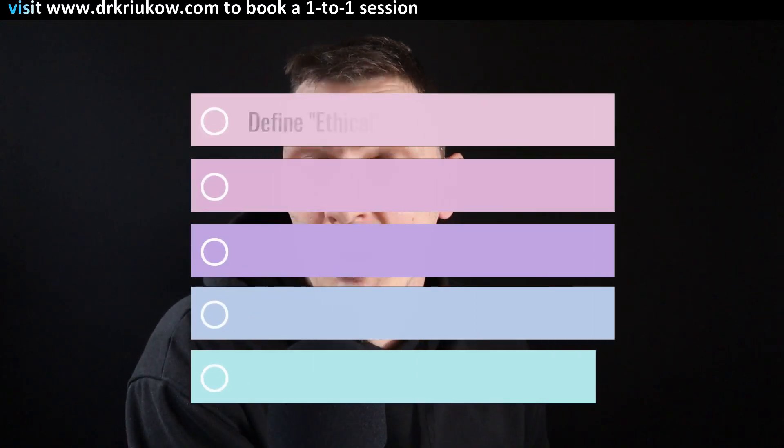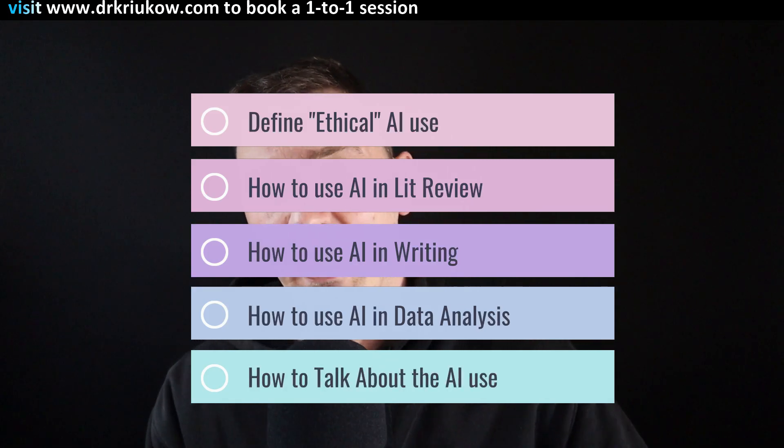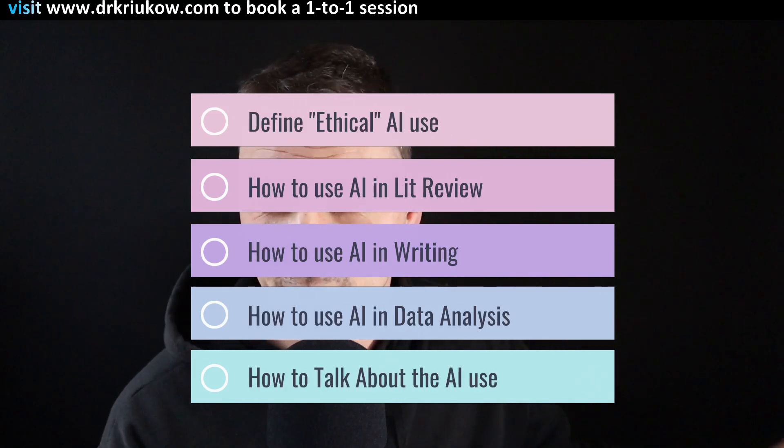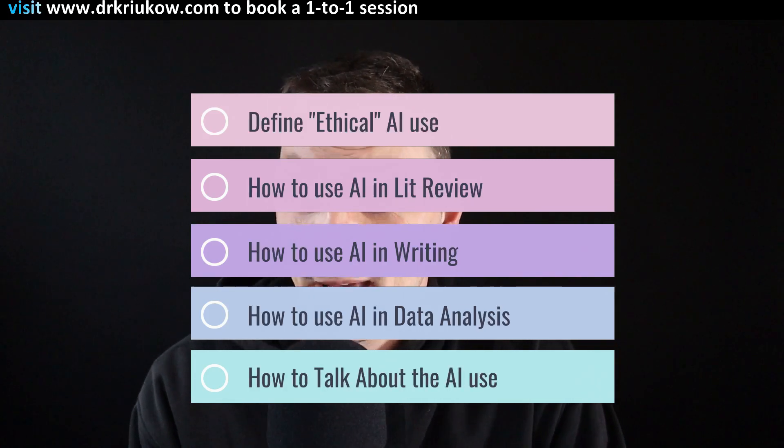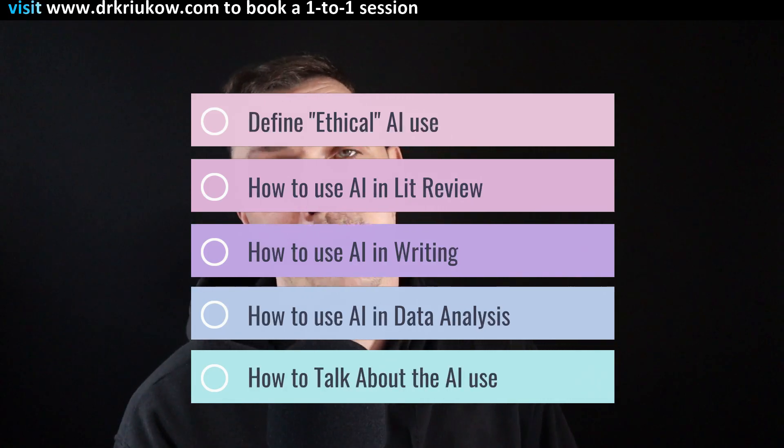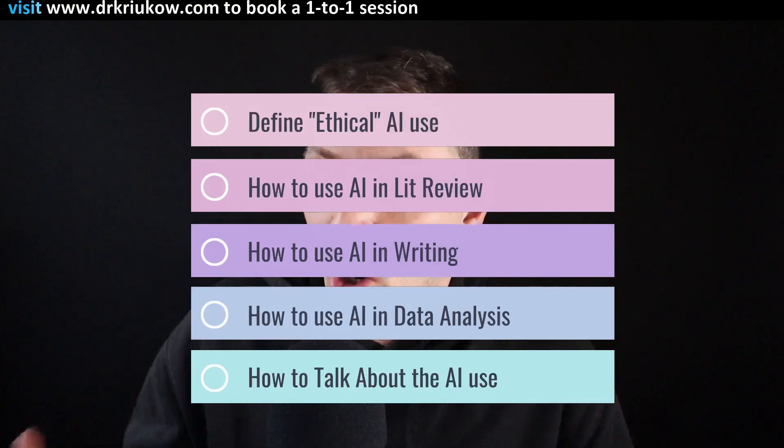Let's talk about what is allowed, what is not allowed, and how to use all these tools ethically. I'll talk about what is ethical AI use in your dissertation, then mention all sorts of things you can use AI for, and finally how to talk about it openly in your dissertation — what you should do and what extent is allowed when it comes to AI use.